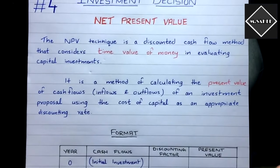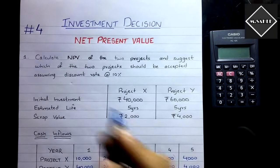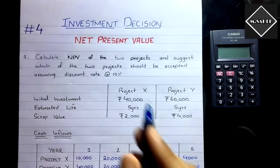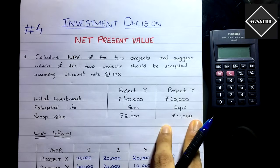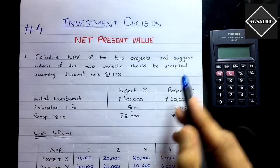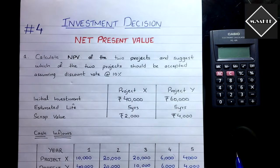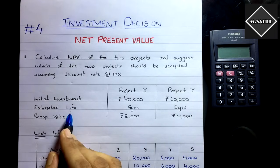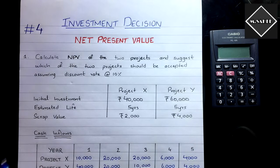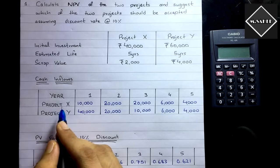Now let's solve the problem. Calculate the NPV of two projects and suggest which should be accepted, assuming a discount rate of 10%. We have Project X and Project Y. The initial investment of Project X is 40,000 and of Project Y is 60,000. The estimated life of both projects is five years, with a scrap value of 2,000 for Project X and 4,000 for Project Y.